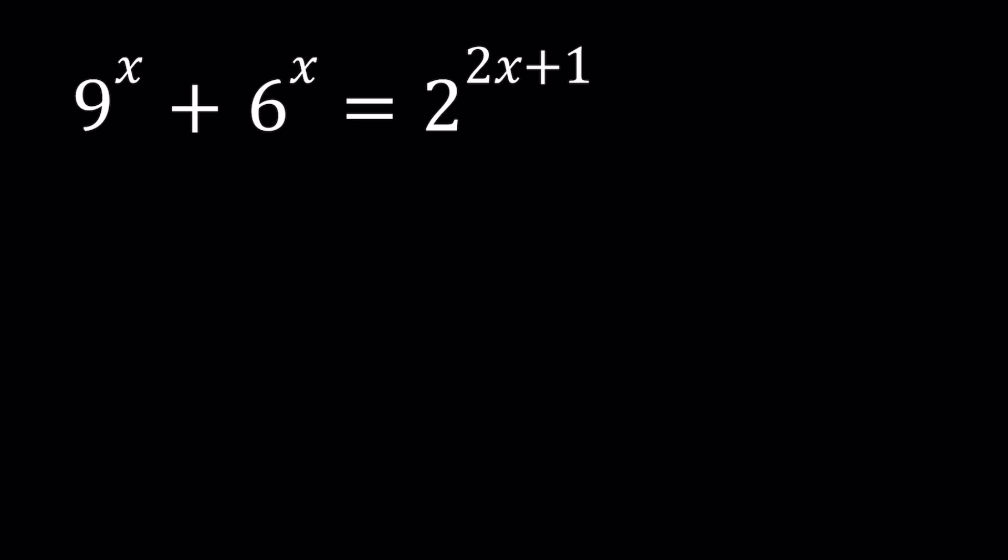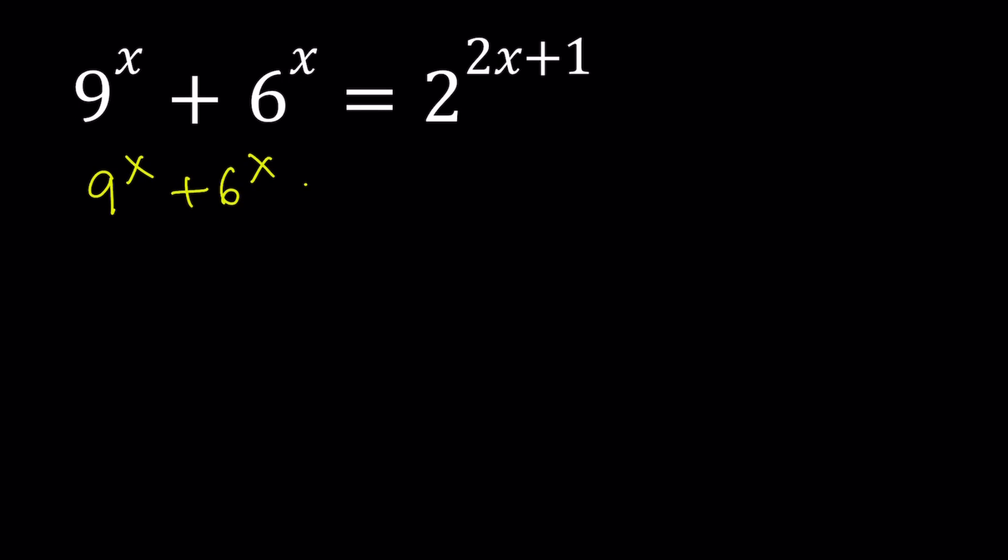Well, we're going to use a very common strategy for these kinds of equations. But let's go ahead and simplify 2 to the power 2x plus 1 first. I'm going to write it as 9 to the x plus 6 to the x equals 2 to the power 2x times 2. And now this can be written as 4 to the power x. So we can write it as 2 times 4 to the power x. We simplified it as much as we can.